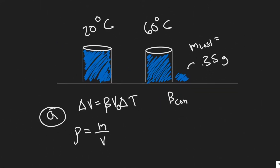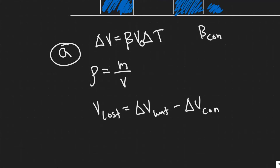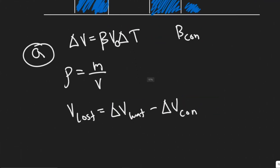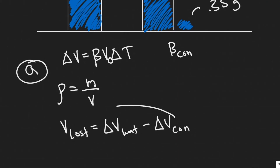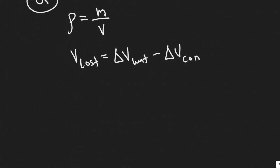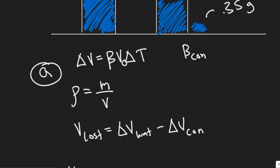In order to solve this problem, we're going to use the idea that the volume lost equals the change in volume of the water minus the change in volume of the container. The water is going to expand more than the container, and since it was already full, water is going to spill out. The difference in volume equals the volume lost.